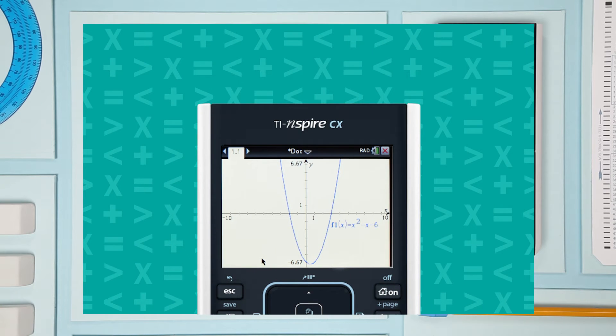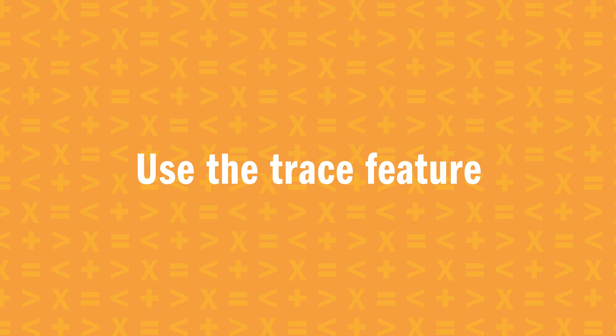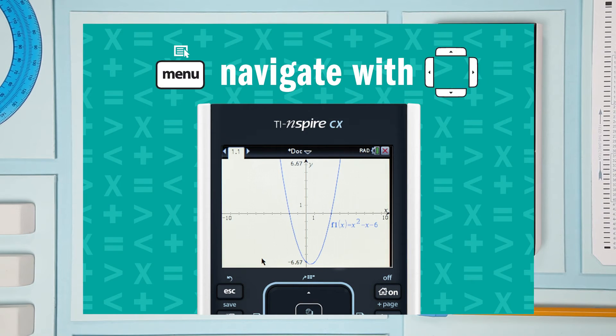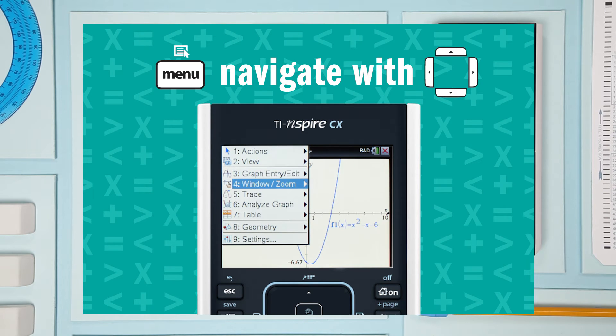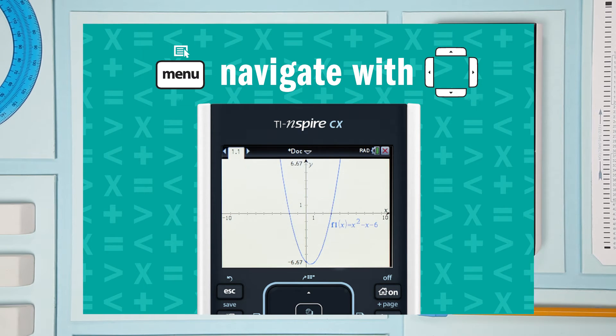That gives you a graph that looks like this. Now let's find those roots using the trace feature. Press menu and select trace and graph trace. See your cursor? Now use the right and left arrows to trace the curve and find the roots.